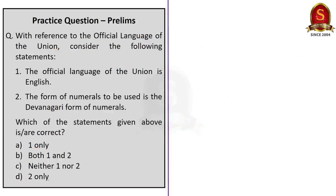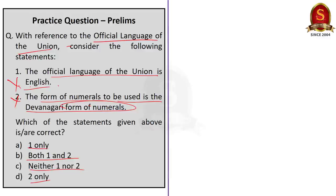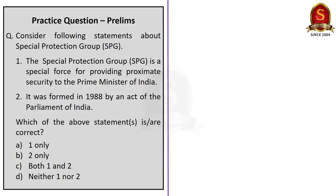Now look at the fourth question. With reference to official language of the union consider the following statement. First statement is the official language of the union is English. The second statement is the form of numerals to be used is the Devanagari form of numerals. Which of the following statements are correct? One only, one and two, neither nor two, two only. See both the statements are incorrect because we have seen in our discussion that the official language of the union is Hindi in Devanagari script. And the form of numerals to be used for official purpose is international form of Indian numerals and not the Devanagari form. So our answer is option C neither one nor two.